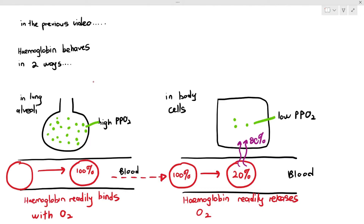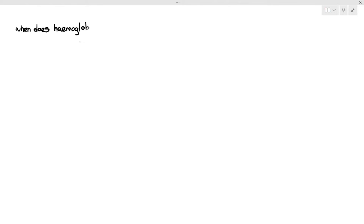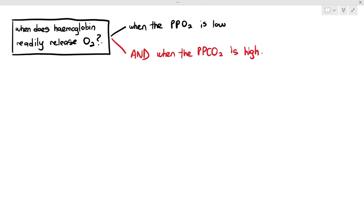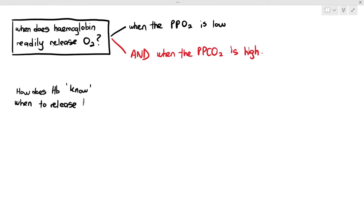For the purpose of this lesson, we must understand that hemoglobin readily releases oxygen when the partial pressure of oxygen is low and when the partial pressure of carbon dioxide is high. Partial pressure of carbon dioxide just means the concentration of carbon dioxide in the area. When those two conditions are met, hemoglobin readily releases oxygen. So what we have to understand is: how does the hemoglobin know when to release the oxygen?